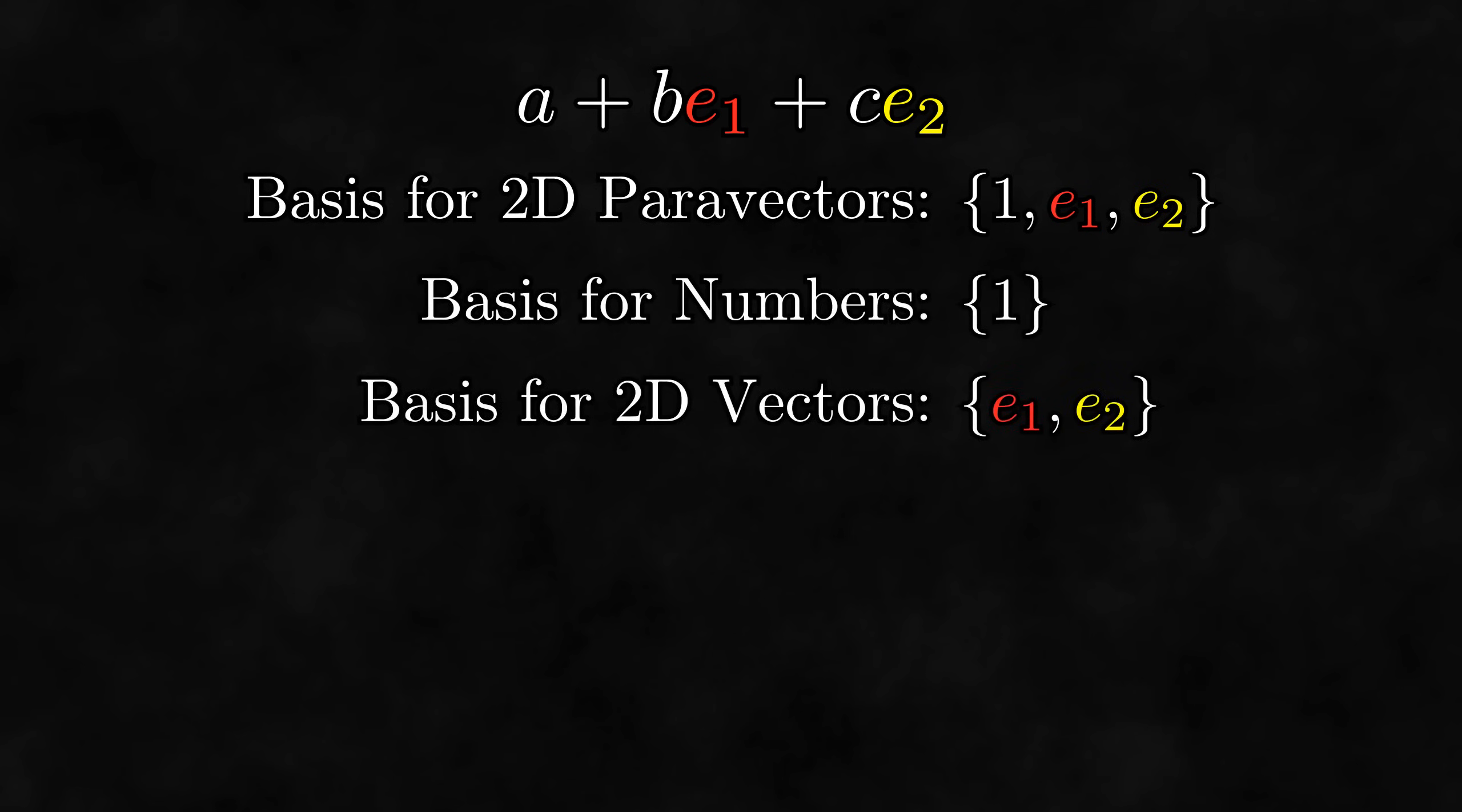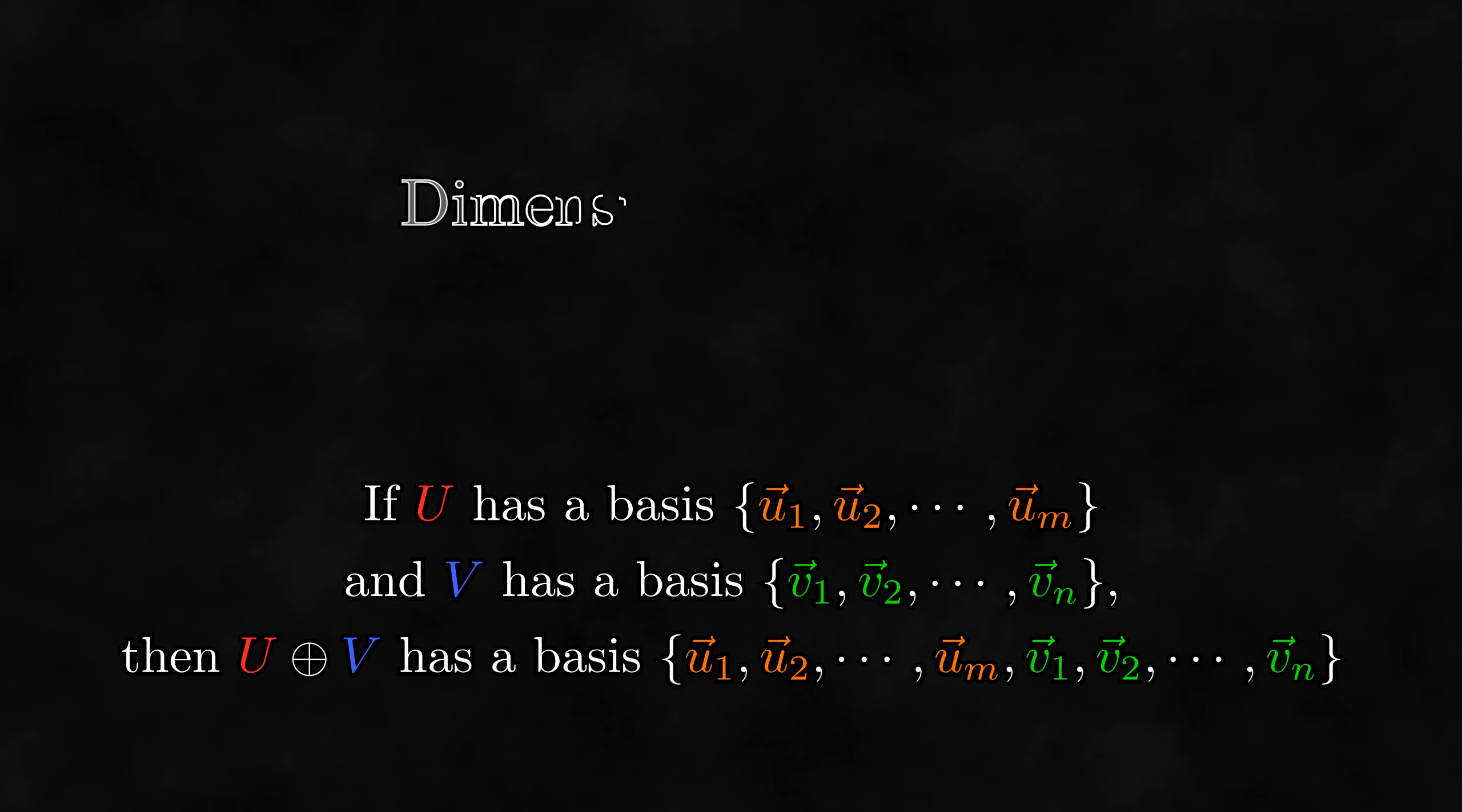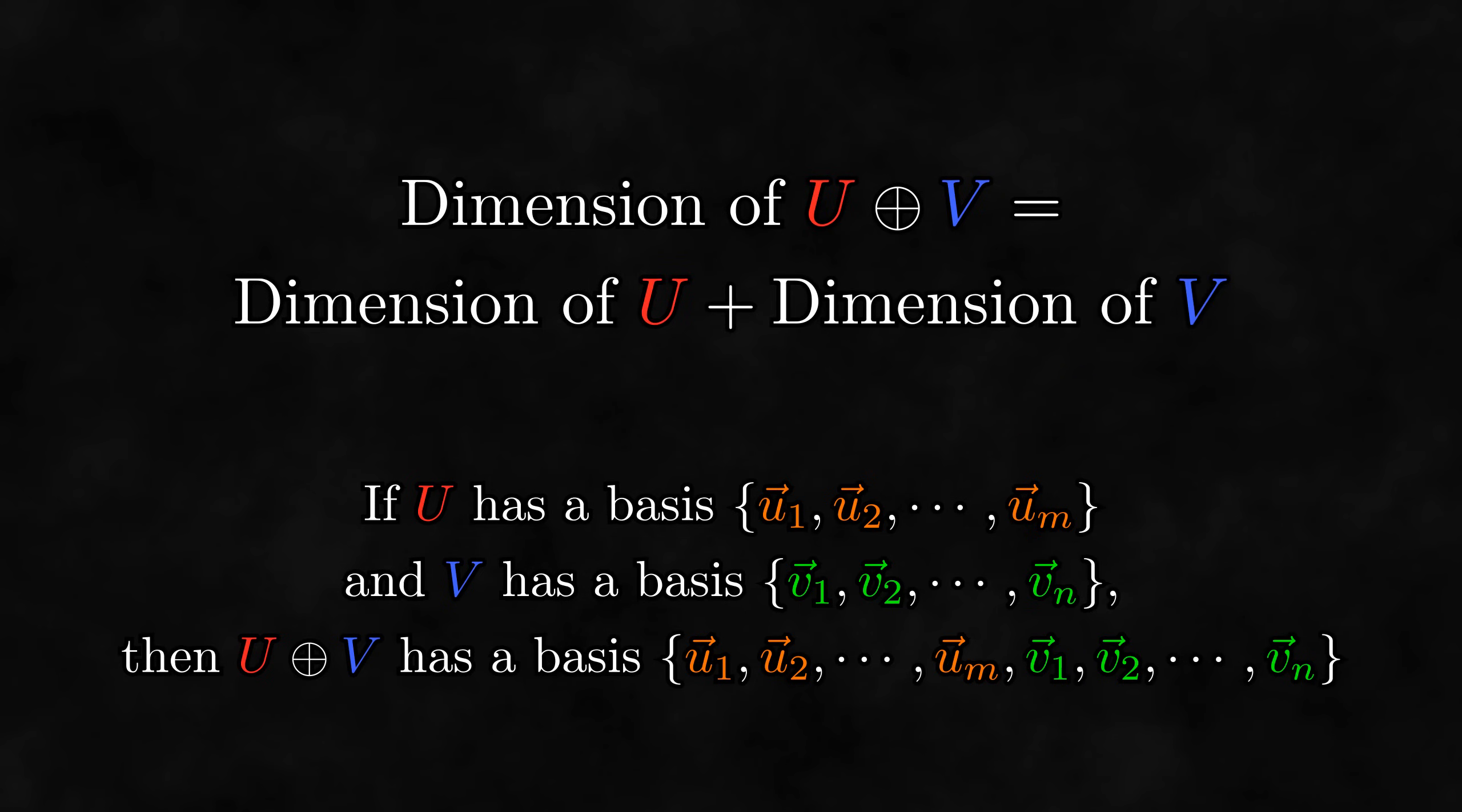Second, thinking back on two-dimensional paravectors, we can represent any of them using a linear combination that looks like this. Looking at this expression, it seems that 1, e1, and e2 form a basis for two-dimensional paravectors. Notice that this basis includes every basis element from the bases for real numbers and two-dimensional vectors. This is true in general. Given two linear spaces with their own bases, the direct sum has a basis that is made up of the two bases put together. Also, because the definition of algebraic dimension is the size of a basis, this means that the dimension of a direct sum is the sum of the dimensions of the summands.